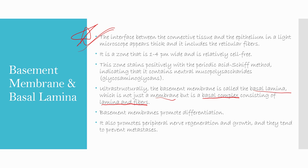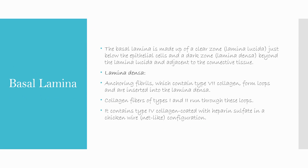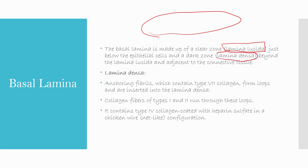The collagen fibers of the basement membrane promote differentiation and proliferation of cells, promote peripheral nerve regeneration and growth, and tend to prevent metastasis. The basal lamina is made up of a clear zone — lamina lucida — which appears blank because it does not contain cells, located just below the epithelial cells, and a dark zone — lamina densa — adjacent to the connective tissue.